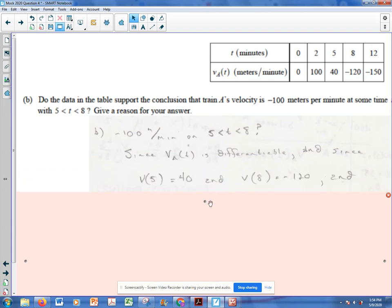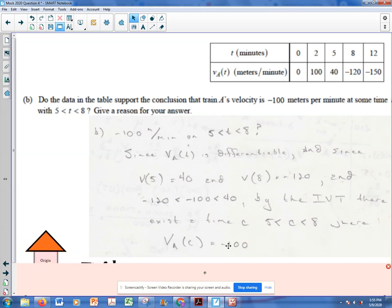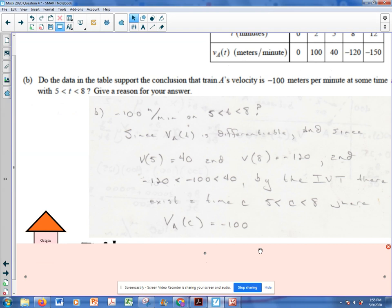So there you go. And since at 5 we're at 40, and at 8 we're at negative 120, and since negative 100 is in between negative 120 and 40, by the intermediate value theorem, there has to be a time between 5 and 8 where that velocity is equal to negative 100. That would get you everything you need for this problem. All right.